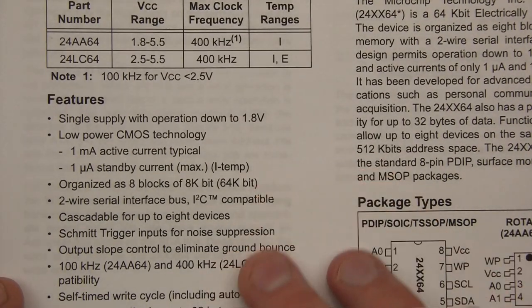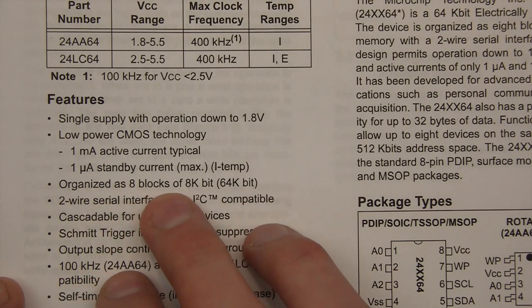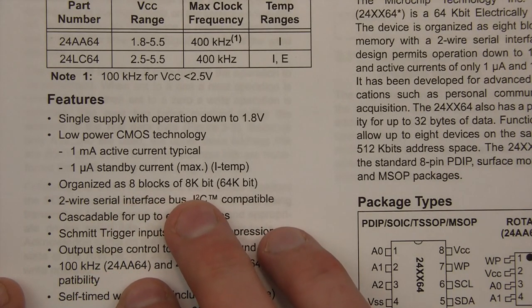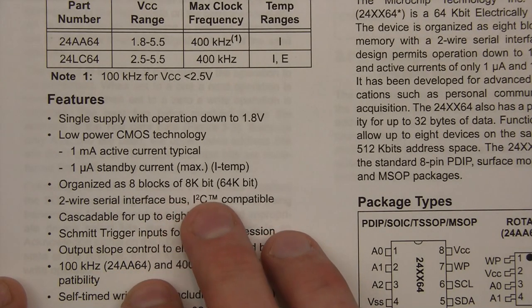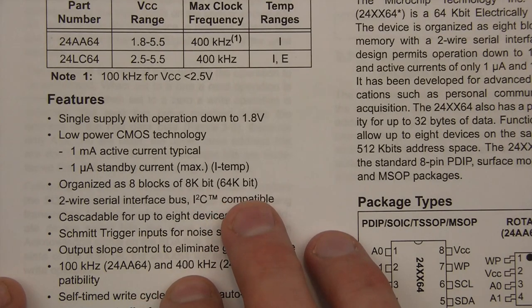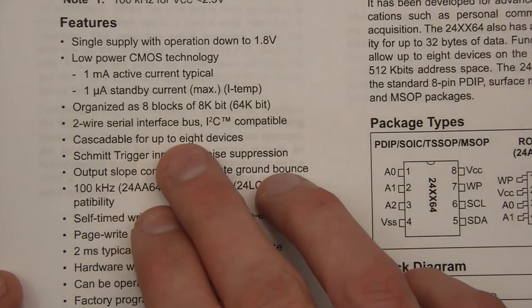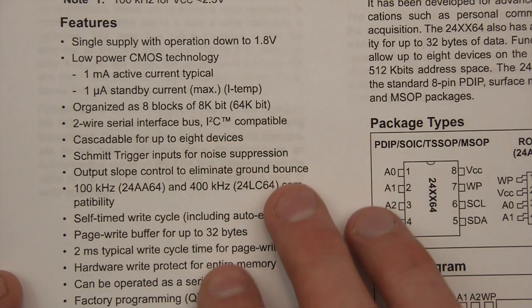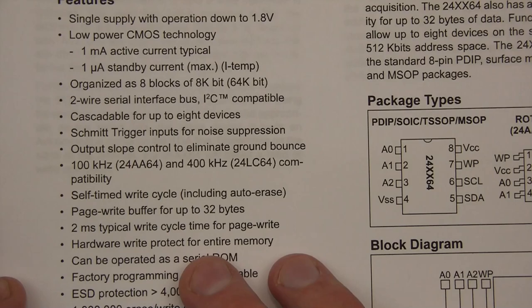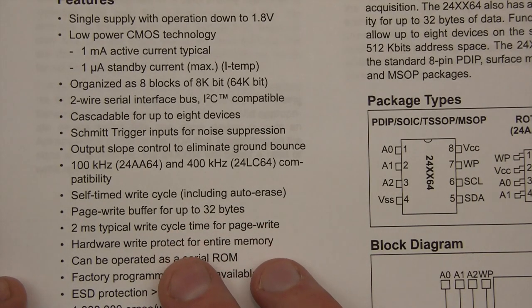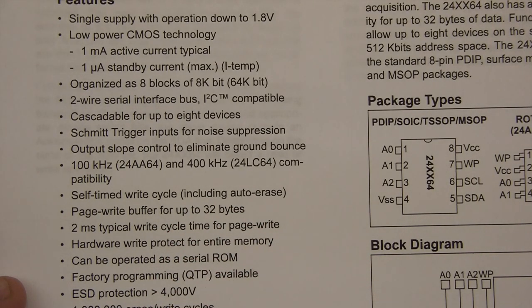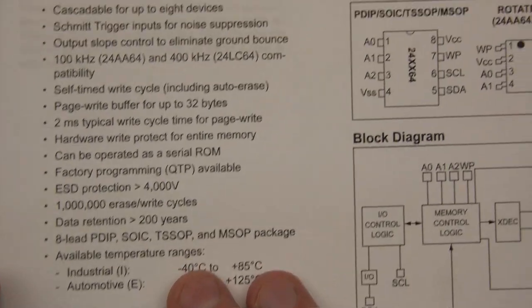I'm not too interested in the rest of that. So is there anything interesting here? Right, organized into 8 blocks of 8K bit, 64K bit. That's a bit silly, isn't it? But okay. Two wires, serial interface, I2C compatible, brilliant. What else? Anything else that's interesting here? Not particularly.